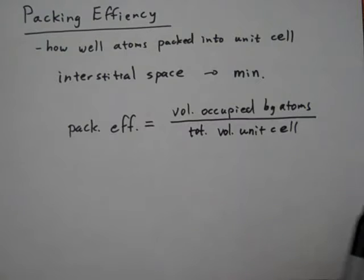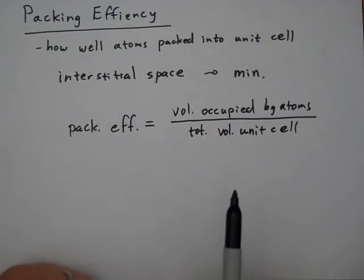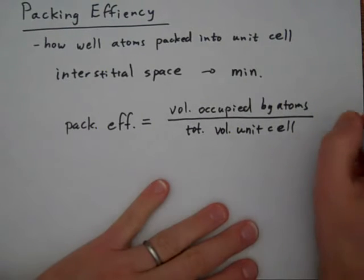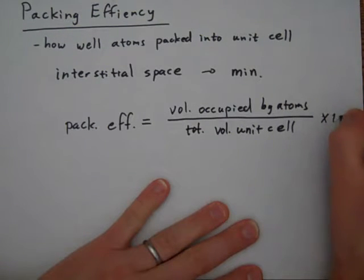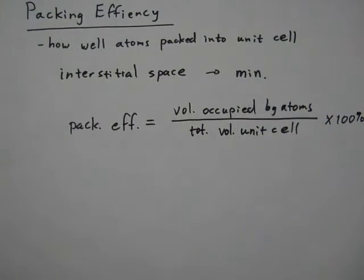And we're going to divide that by the total volume of the unit cell. So if the unit cell was completely filled with atoms, if there were no little empty gaps, empty spaces, no interstitial spaces between them, then we would have 100% packing efficiency. But if atoms are modeled as little spheres, we'll never be able to pack them with 100% packing efficiency.